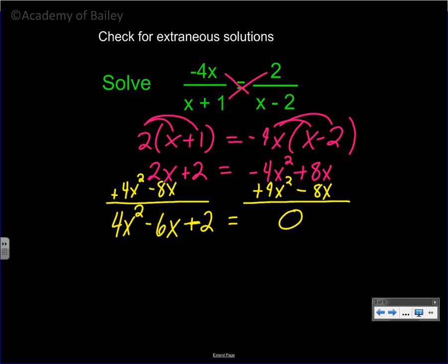So we're going to add 4x squared — there's no like term with it — and we subtract 8x from 2x. So we have 4x squared, 2x minus 8x is negative 6x, and a positive 2. I know 2 goes into every single one of them, so I'm factoring that out, leaving 2x squared minus 3x plus 1, and that's equal to 0.